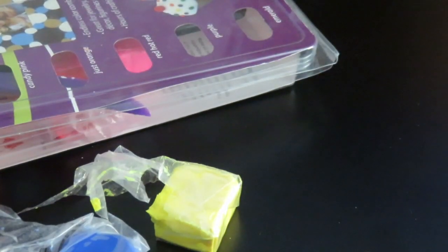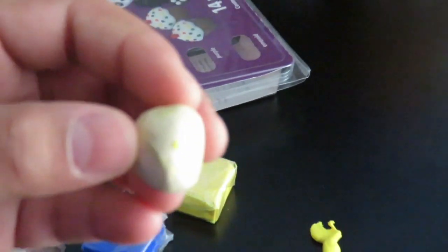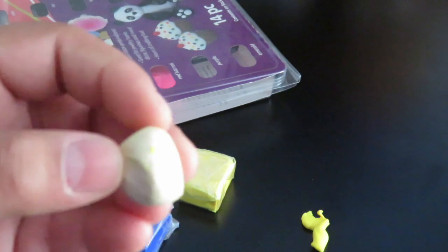So first get your tan, then roll it up in a ball, but then squish the back of it so it looks like this.